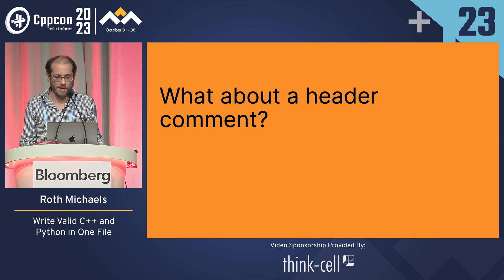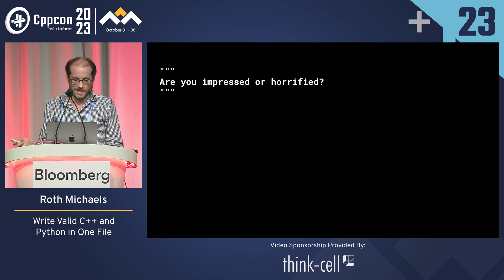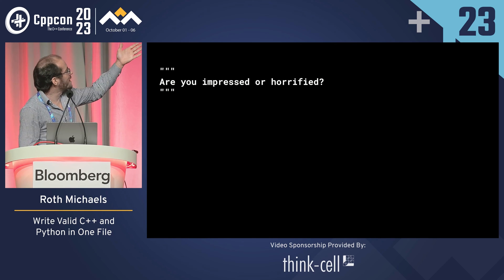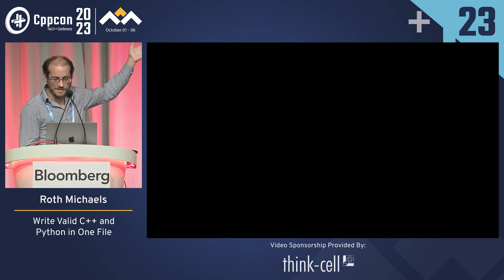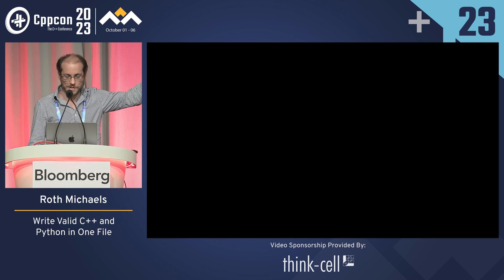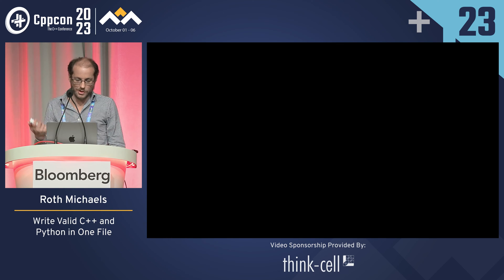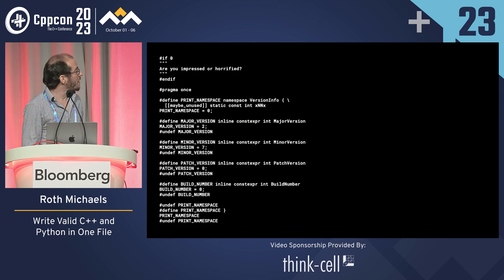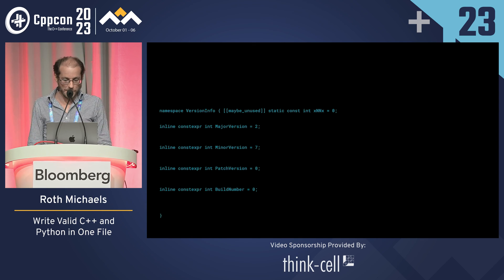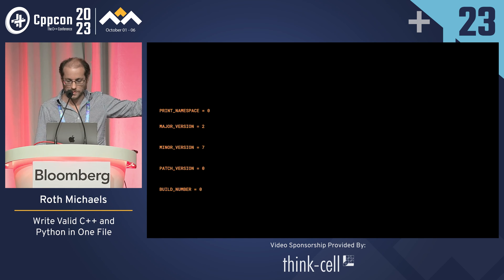What about a header comment? Well, in Python comments are just strings. We can handle this — sorry, slides are out of order — it's a comment in Python, and we can get rid of it by just if-defing it out in C++. In C++ it becomes this, and in Python you get this with comments, and the interpreter sees this. So all together now, here's the whole file. In C++ after preprocessing it looks like this, and in Python here's what you import.